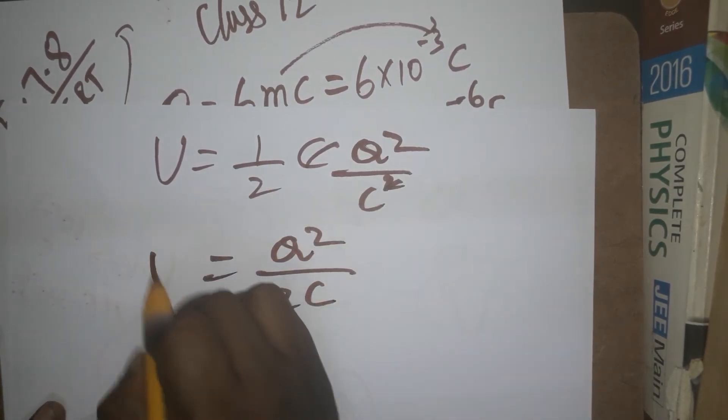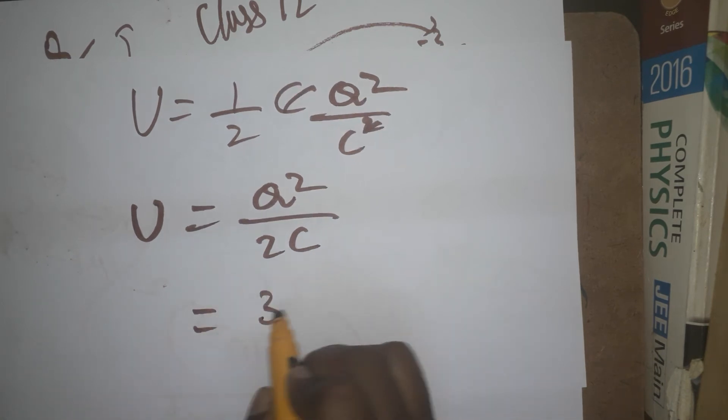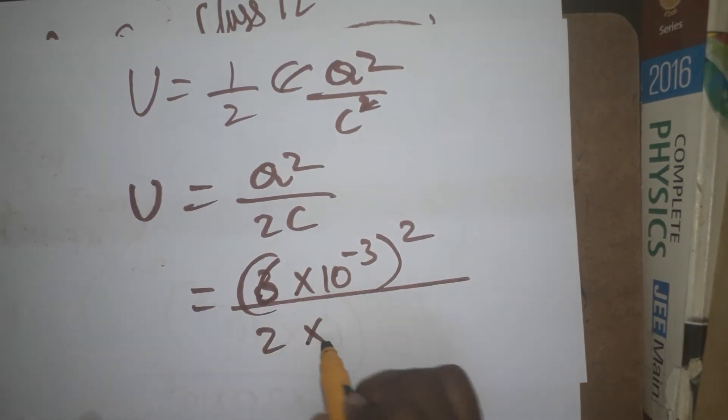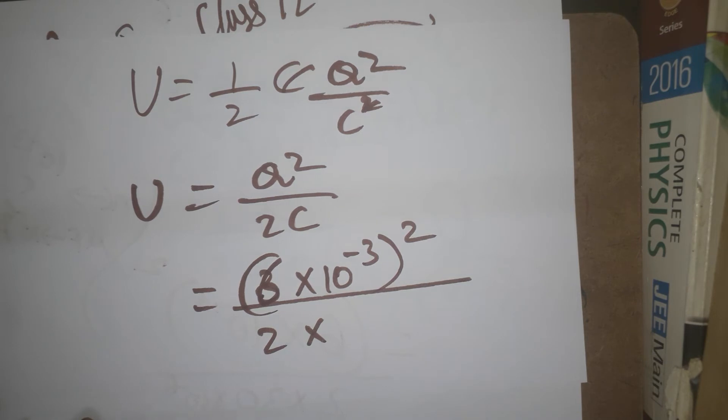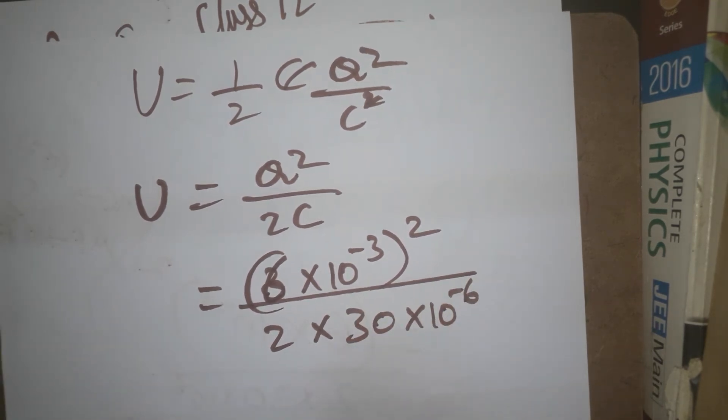The charge Q is 6 millicoulombs = 6×10^-3 coulombs. This is squared and divided by 2 times the capacitance, which is 30 microfarads = 30×10^-6 farads. So U = (6×10^-3)² / (2×30×10^-6).